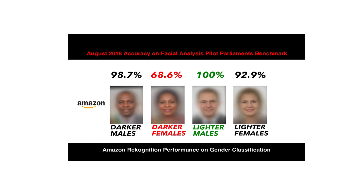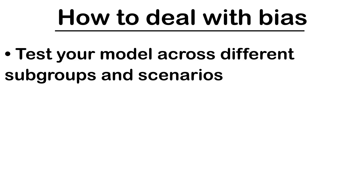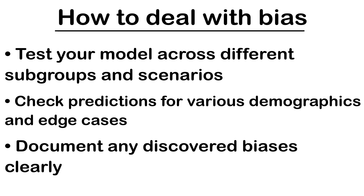Like you can see here, the model has an easier time both with males and with lighter-skinned individuals, presumably because the dataset contained more examples from those groups. Test your model across different subgroups and scenarios. Check predictions for various demographics and edge cases. Document any discovered biases clearly.